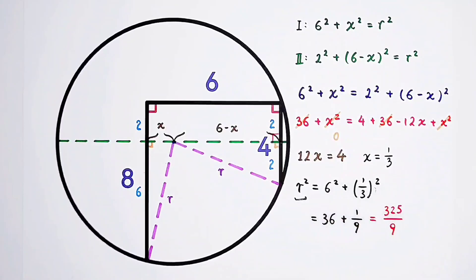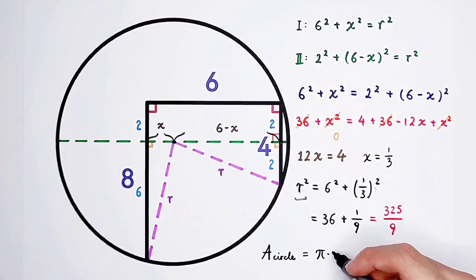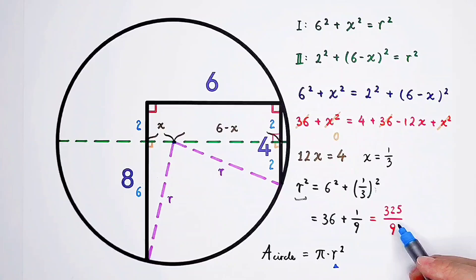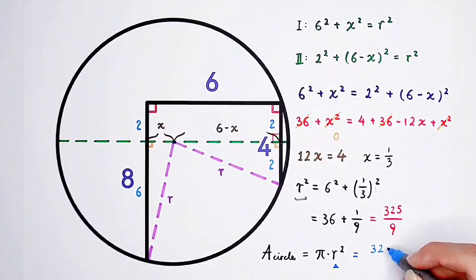We've solved r squared. The radius squared. So the last step is to solve for the area of the circle. The area of the circle. There is a formula. You have to memorize. It is. The area of the circle is pi then times radius squared. And we've got the radius squared. r squared is 325 over 9. So then times pi. So the answer is 325 times pi then over 9.